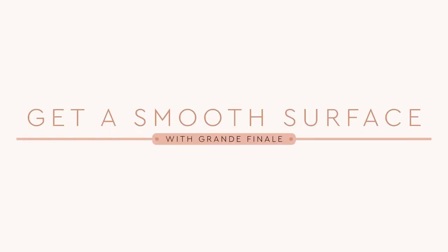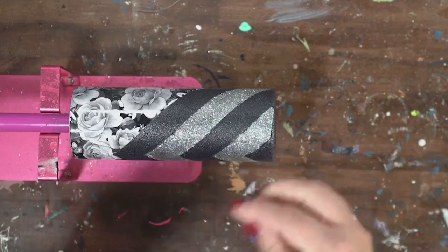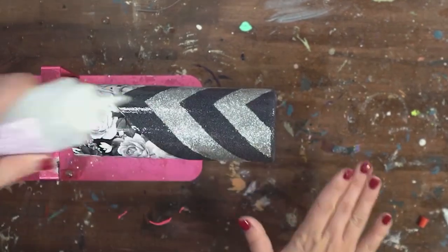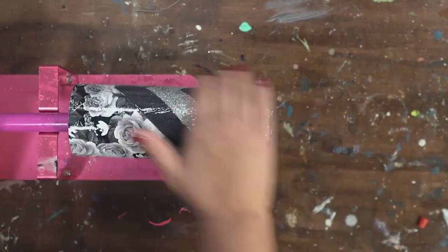Once you get your glitter on and sealed it's time to get a smooth surface. You get a smooth surface by applying your coats of Grand Finale and sanding until it is smooth. I will link a step-by-step tutorial of that process in the top right corner.